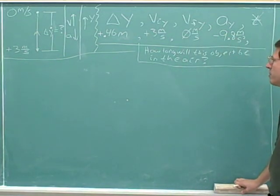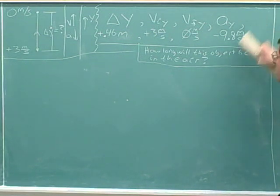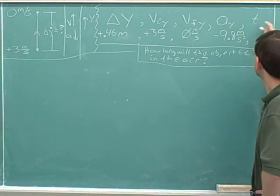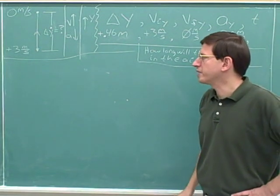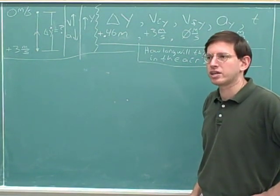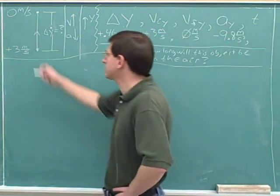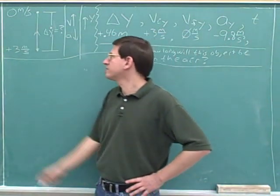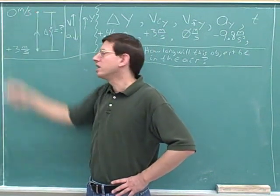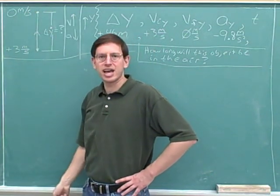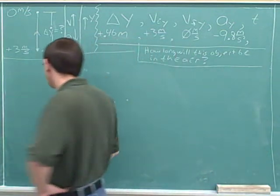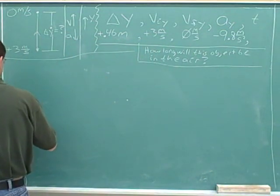Now we want to indicate what this question is asking us — it seems like it's focusing on the time. But here would be a case where it would be helpful to really go back to our path. Is this the correct drawing for the path? Well, now it's not, because now the final position is not at the peak anymore. Now we're rising and then falling down as well, so now the path would look like this.